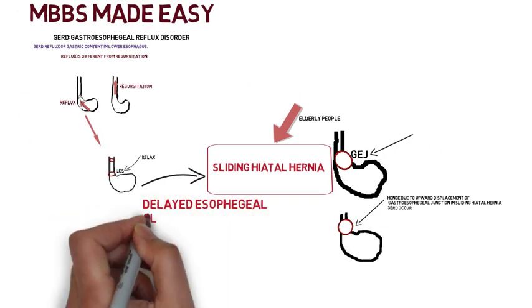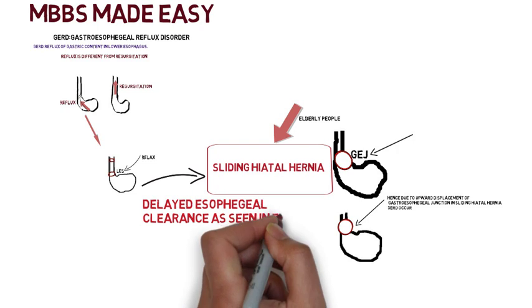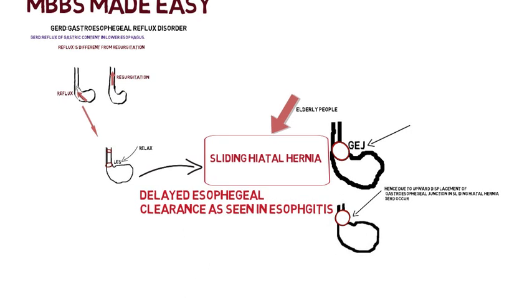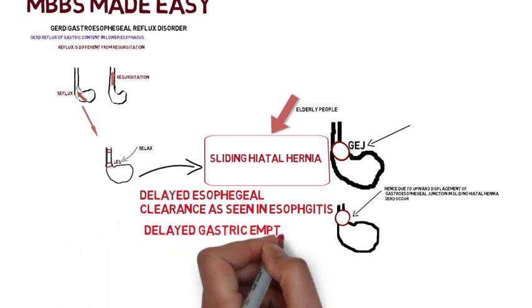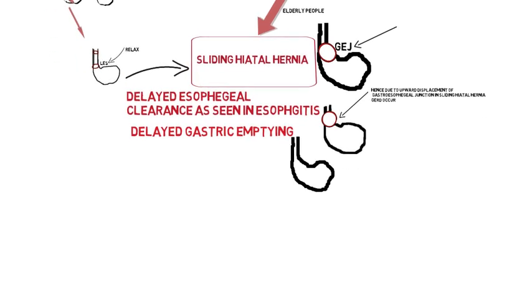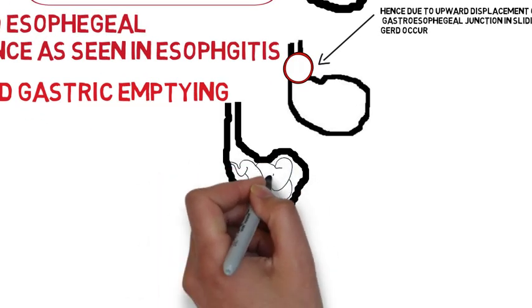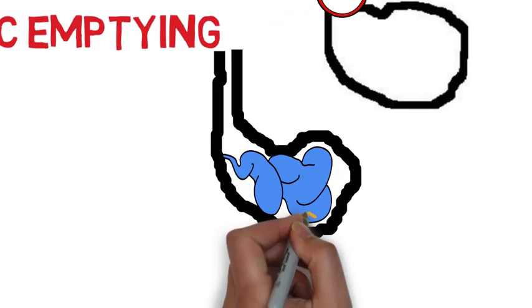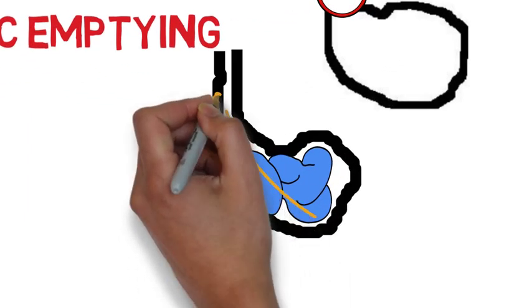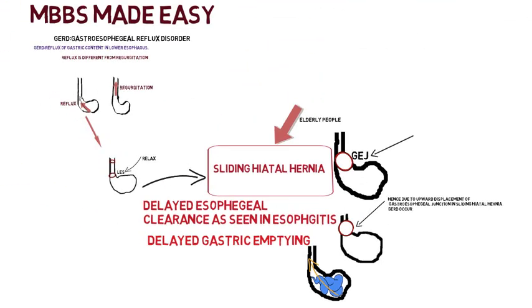Number two risk factor which causes GERD is delayed esophageal clearance, which is mainly seen in esophagitis. Number three risk factor is delayed gastric emptying. If your stomach is filled with food, it may cause upward movement of food from the stomach into the esophagus and hence GERD.